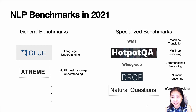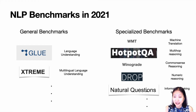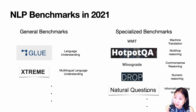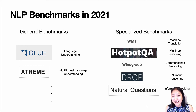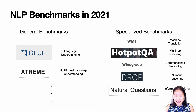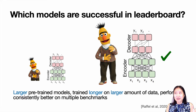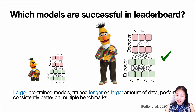There are general benchmarks like GLUE or XTREME focusing on general language understanding, and more specialized benchmarks focusing on particular aspects — commonsense reasoning, multi-hop reasoning, and so forth. If you look at leaderboards these days, you'll notice one trend: regardless of what language phenomenon you're trying to capture, the successful models are large pre-trained models trained longer on larger amounts of data, performing consistently better on multiple benchmarks.